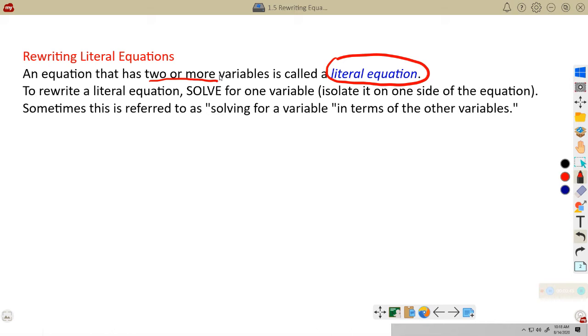Now, we can't solve, you cannot solve an equation that has two or more variables, because when one variable changes, the other variable changes too, because they're related to each other. So what we're going to do here is write, well, let me read this to you. To rewrite a literal equation, we're going to solve for one variable. We're going to isolate it on one side of the equation.